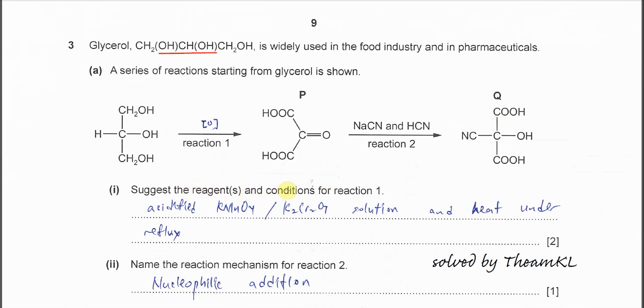Part 1: Suggest the reagents and conditions for reaction 1. From reaction 1 we know that there are few changes. This OH is going to undergo oxidation. This H and this H are removed to form the C=O double bond, forming this ketone, and the primary alcohols will form COOH. So this is oxidation. We can use acidified KMnO4 or K2Cr2O7. These two can be used in your syllabus and must heat under reflux, because heat under reflux can make sure all the alcohol is fully oxidized.